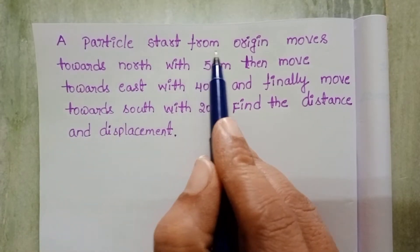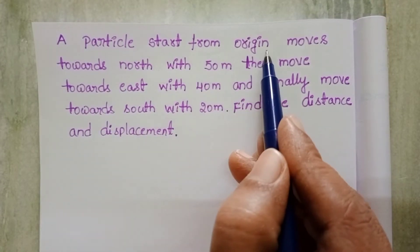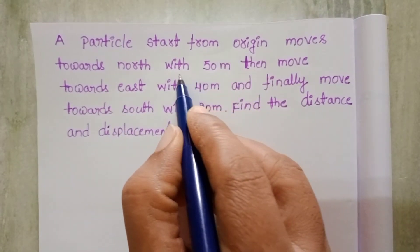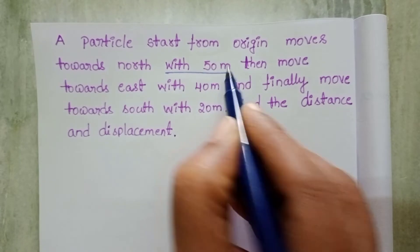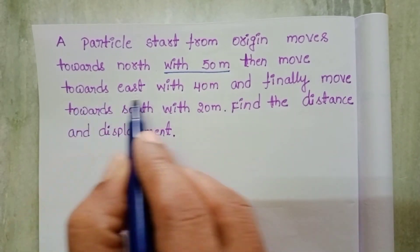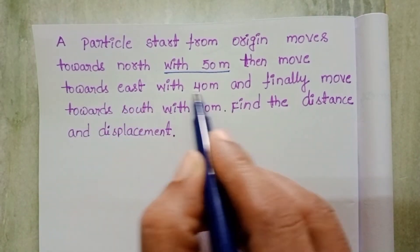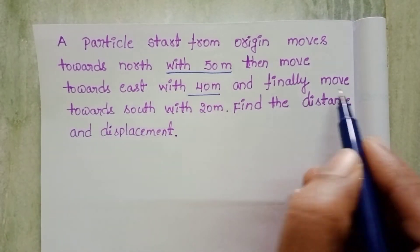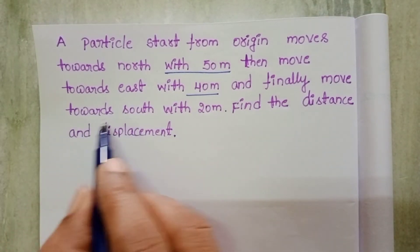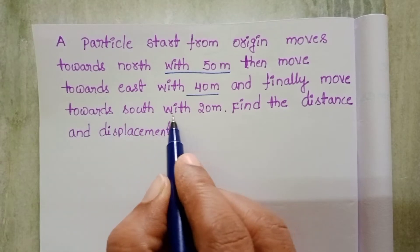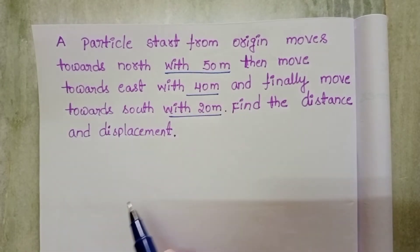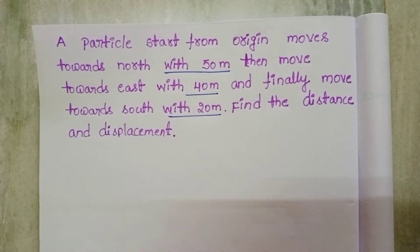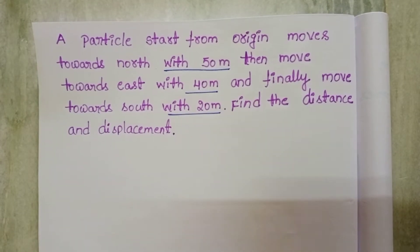A particle starts from the origin, moves towards north with 50 meters, then moves towards east with 40 meters, and finally moves towards south with 20 meters. Find the distance and displacement.